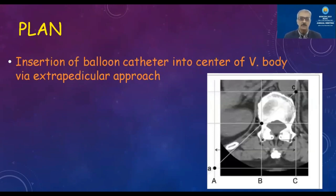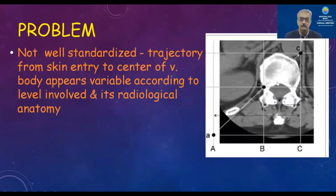The plan for single balloon kyphoplasty is to insert a balloon catheter into the center of the vertebral body via an extrapedicular approach. However, the problem is that it is not a well-standardized procedure — the trajectory from the skin entry point to the center of the vertebral body appears variable according to the level involved and its radiological anatomy.